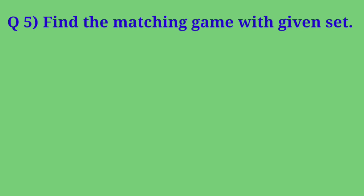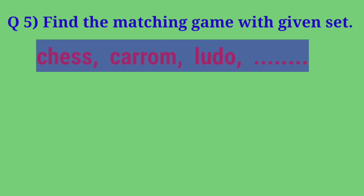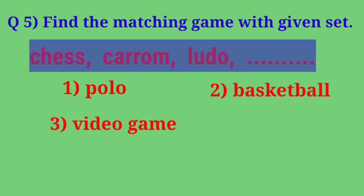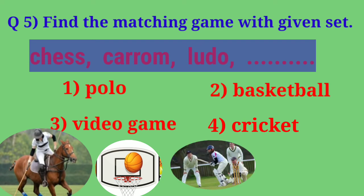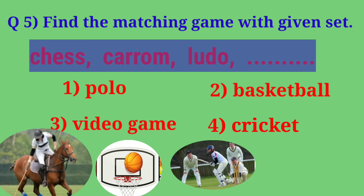Next question: find the matching game with the given set. The given set is chess, carom, ludo. The options are polo, basketball, video game, cricket. If we observe carefully, chess, carom, and ludo are all indoor games. From the given four options, polo, basketball, and cricket are outdoor games, and only video game is an indoor game. So the matching game with the given set is video game.